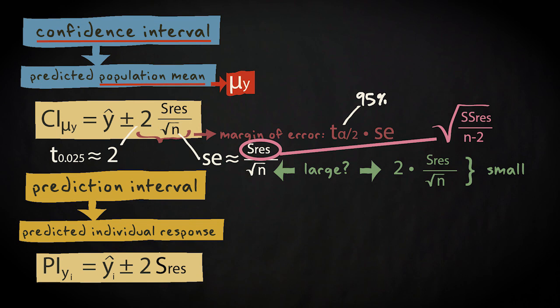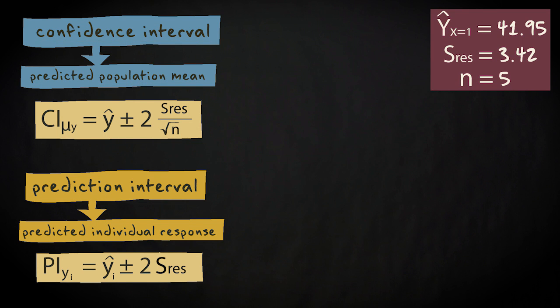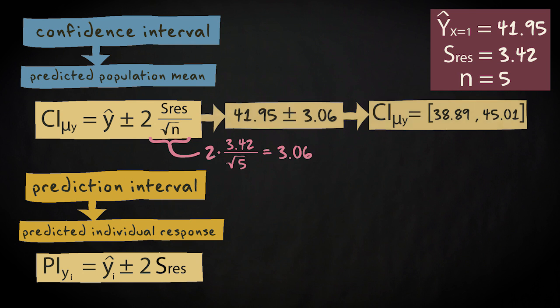Suppose that in our example the predicted value for one year old cats is 41.95. The residual standard deviation is 3.42 and the sample size n is 5. Then the margin of error is 2 times 3.42 divided by the square root of 5. This equals 3.06. So the confidence interval around the predicted value of 41.95 for one year old cats ranges from 38.89 to 45.01.